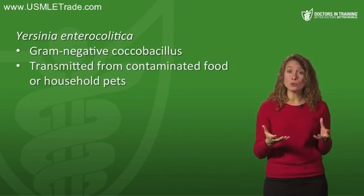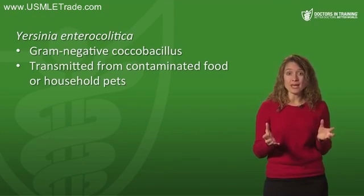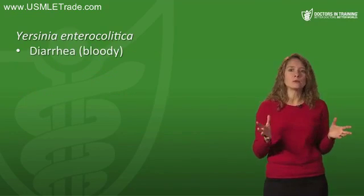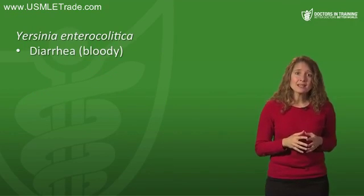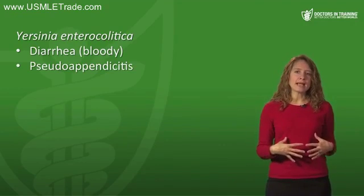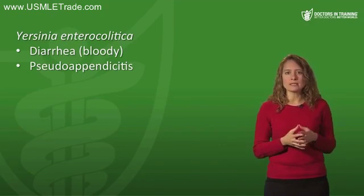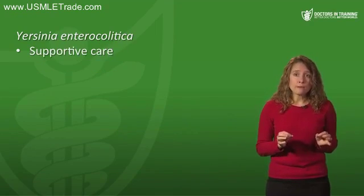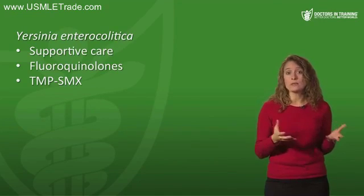Let's talk about yet another cause of bloody diarrhea: Yersinia enterocolitica, a gram-negative coccobacillus. It's usually transmitted from contaminated food like undercooked pork, and there has been some transmission from household pets. Incubation is four to six days. One important syndrome to remember is pseudo-appendicitis — Yersinia infection can cause mesenteric adenitis and right lower quadrant pain, leading to misdiagnosis of appendicitis and even appendectomy. Treatment is supportive for mild cases; fluoroquinolones or trimethoprim-sulfamethoxazole when treatment is required.